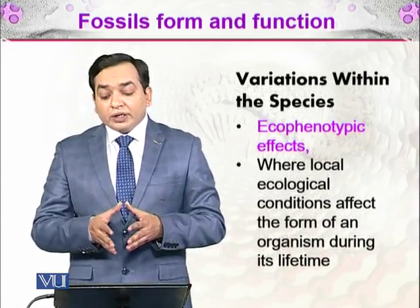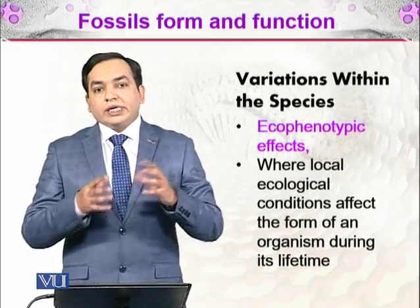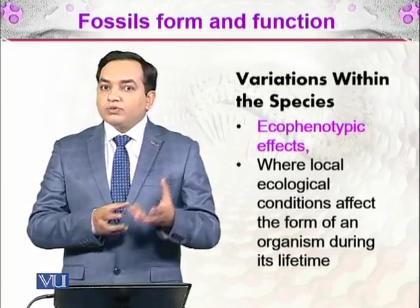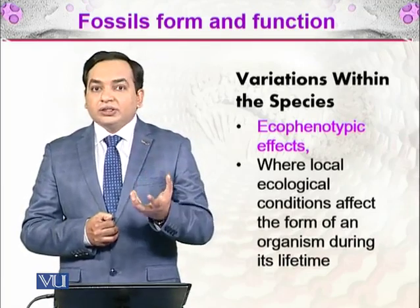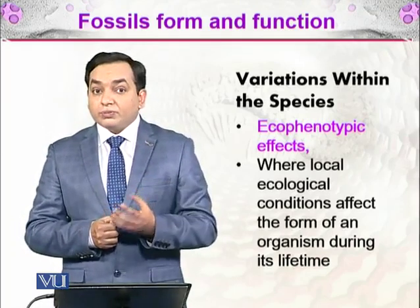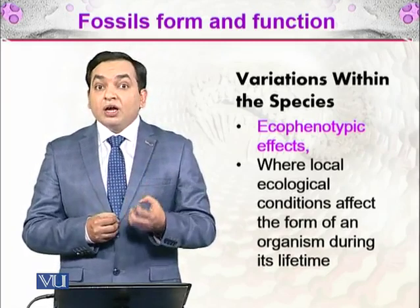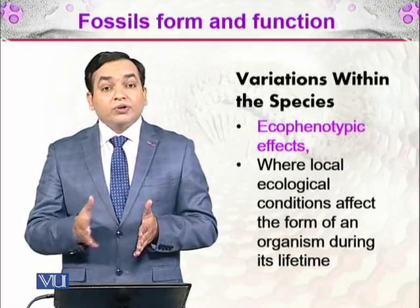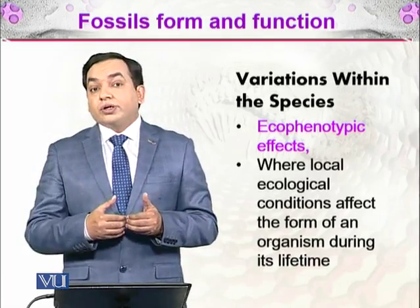Another source of variation is eco-phenotypic effects — the environment also affects body form. For example, freshwater has very little salt, so there will be less calcification in the shells of shelled organisms like mussels or snails. In a marine environment with more calcium in the water, their shells will be heavier and more calcified. Local or ecological conditions affect the form of an organism during its lifetime, so within a species, different habitats can affect body forms.